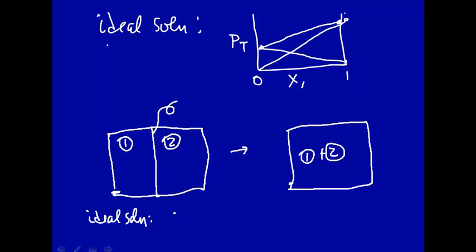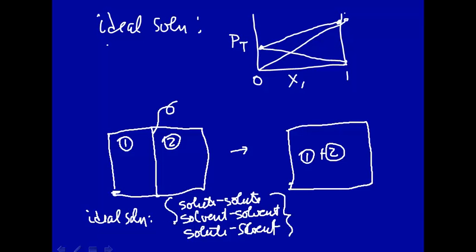The idea here is that if you have an ideal solution, the following interactions are negligible: the solute-solute, the solvent-solvent, and the solute-solvent interactions. These interactions are all negligible.